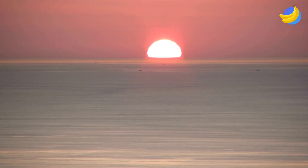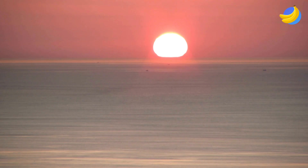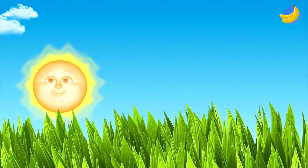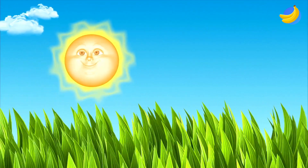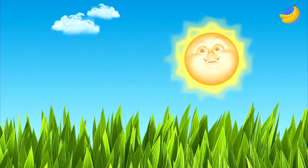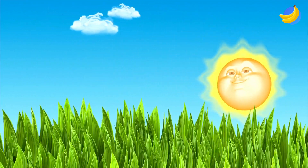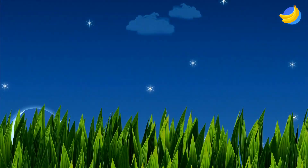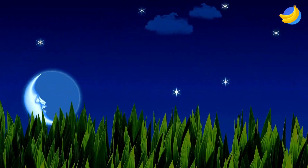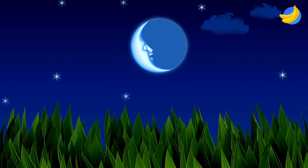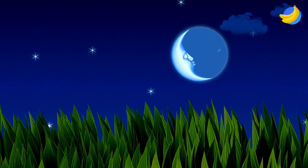It becomes day because the sun rises, and in the course of the day, the sun moves in an arc across the sky. And it disappears at the end of the day, and then it becomes night. It looks like day and night alternate because the sun moves in the sky.